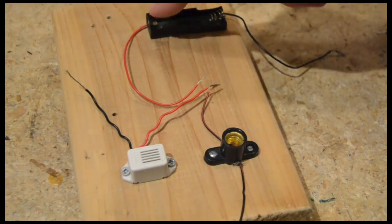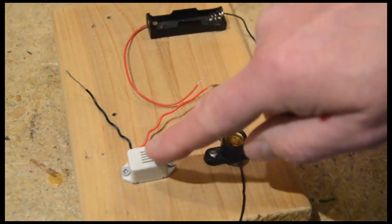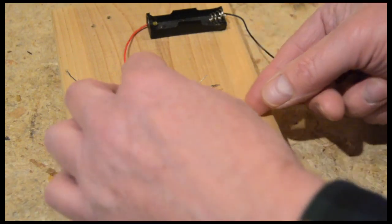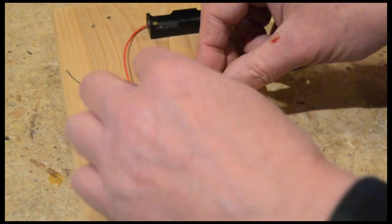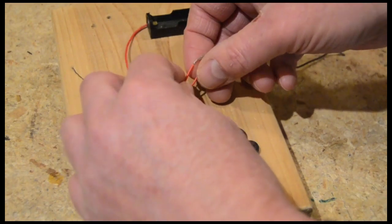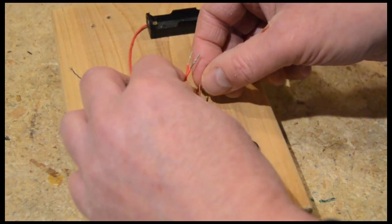Take one wire each from the battery holder, the buzzer, and the bulb holder and connect them by twisting them together. I'm connecting the red and red and black striped wires from each device for convenience and identification.